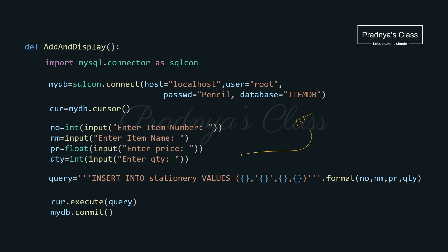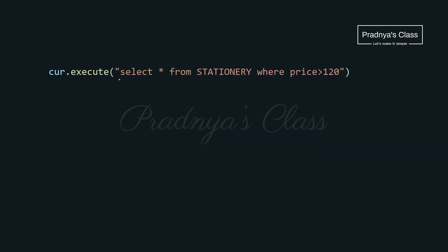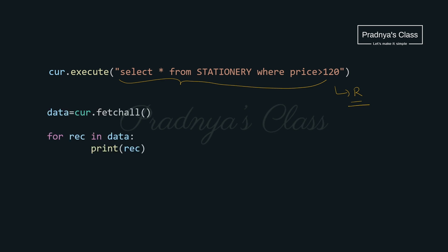In this way the first task of inserting data into the table is done. What's the next task? We need to display records based on the condition — price should be greater than 120. This is how the SELECT query looks: SELECT * FROM stationary WHERE price > 120. Using the execute function we execute the query, then we get the result set. We use fetchall because we need all the records — fetchall works with the cursor object. Then using a for loop we iterate over the records and print them one by one. With that, we have completed the second task too.